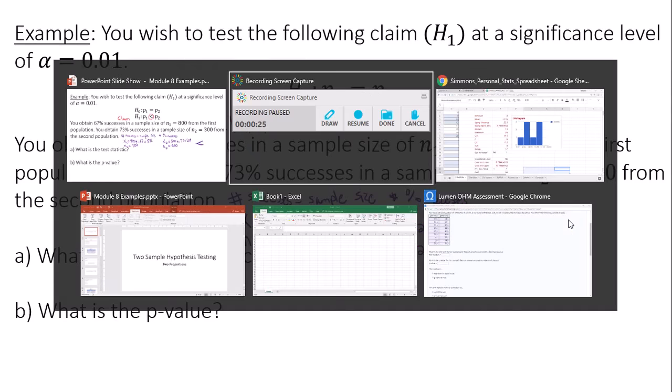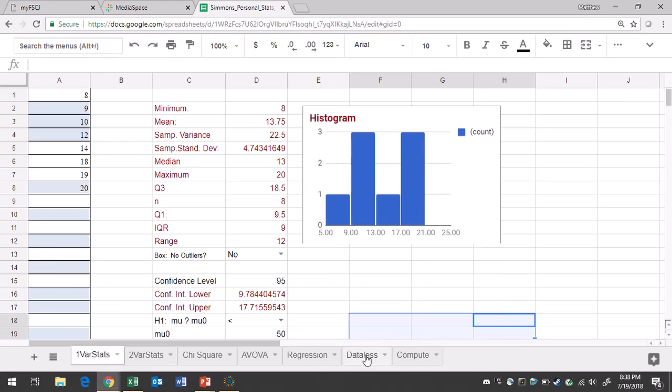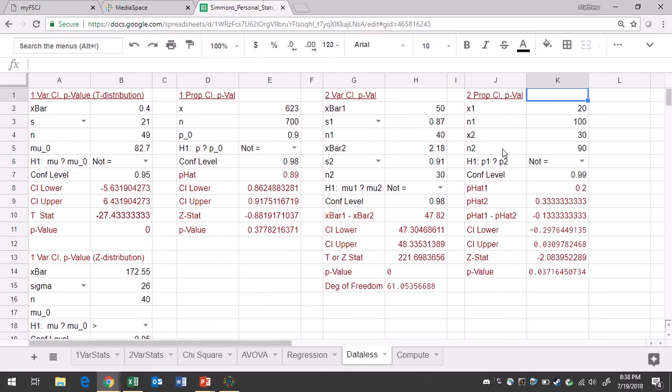So in Google Sheets, we'll go to the data list tab. We'll go to the 2 prop CL p-value region. Type in successes and the sample size for group 1. That would be 536, 800. The successes for group 2, 219. And the sample size, 300. And make sure you change your hypothesis sign to less than.